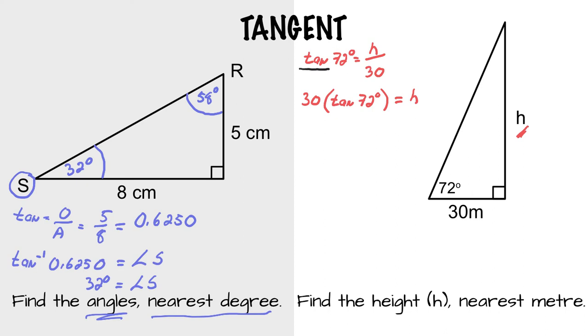Multiplied by tangent 72, and that's going to give you h. Remember cross multiplication. When you've got nothing underneath a value, there's that hidden one. So if you can do this complete in your calculator, all in one step.